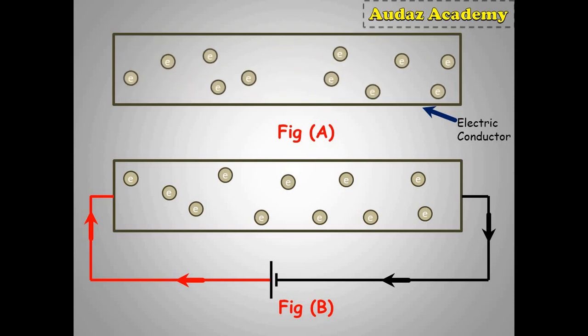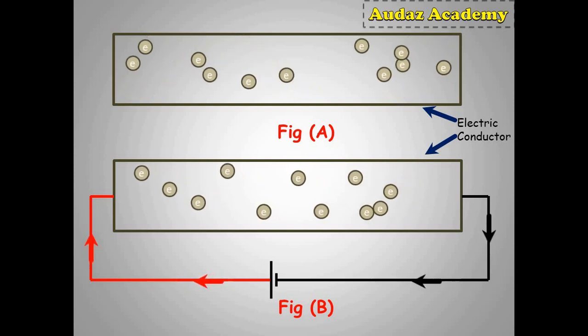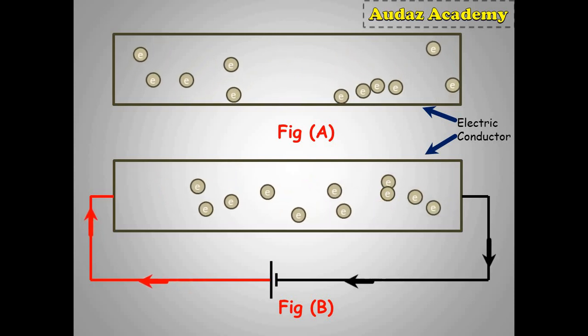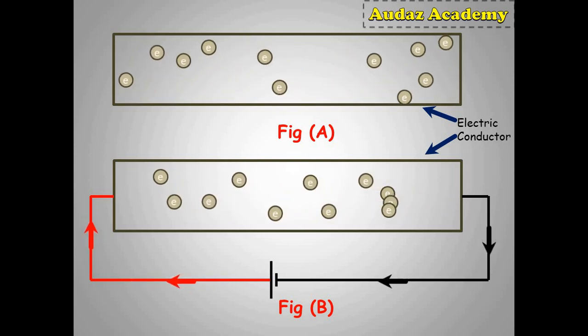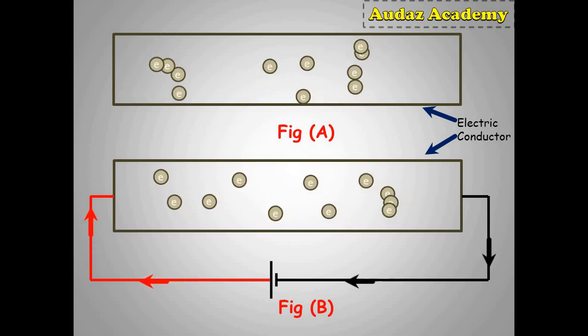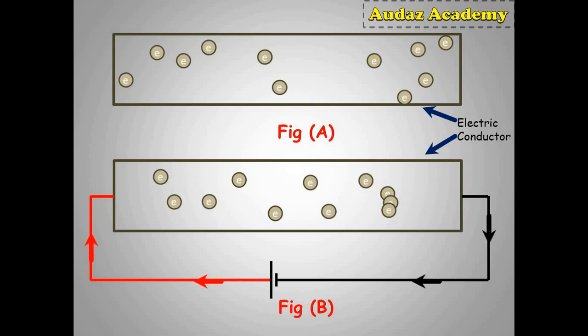But if we observe figure B, we apply a potential difference using a DC voltage source, that is battery. As soon as the battery gets connected in the circuit, the random motion of electron is not observed. We observe the drift in the direction of motion of electrons in a particular direction.